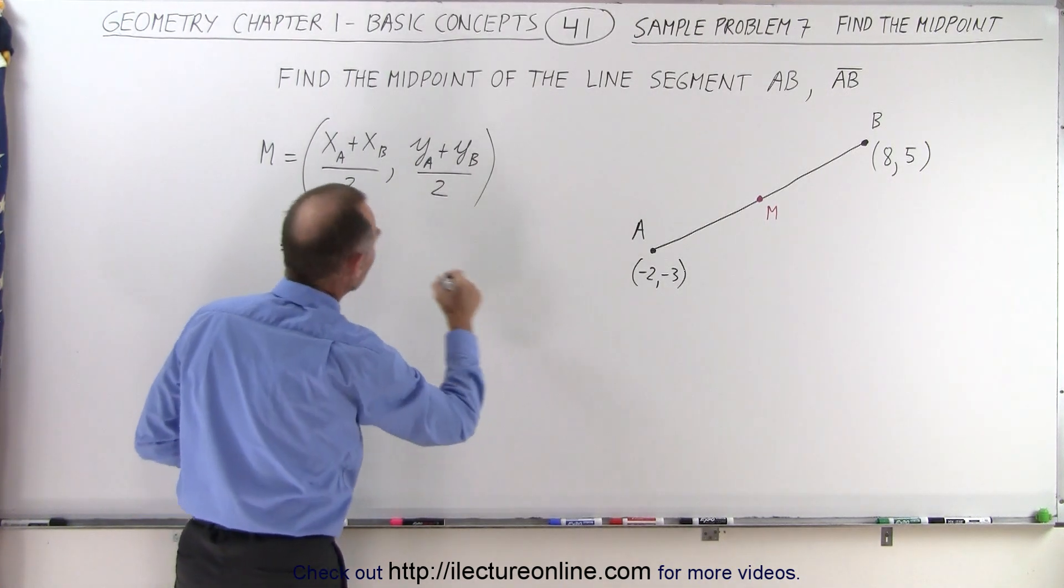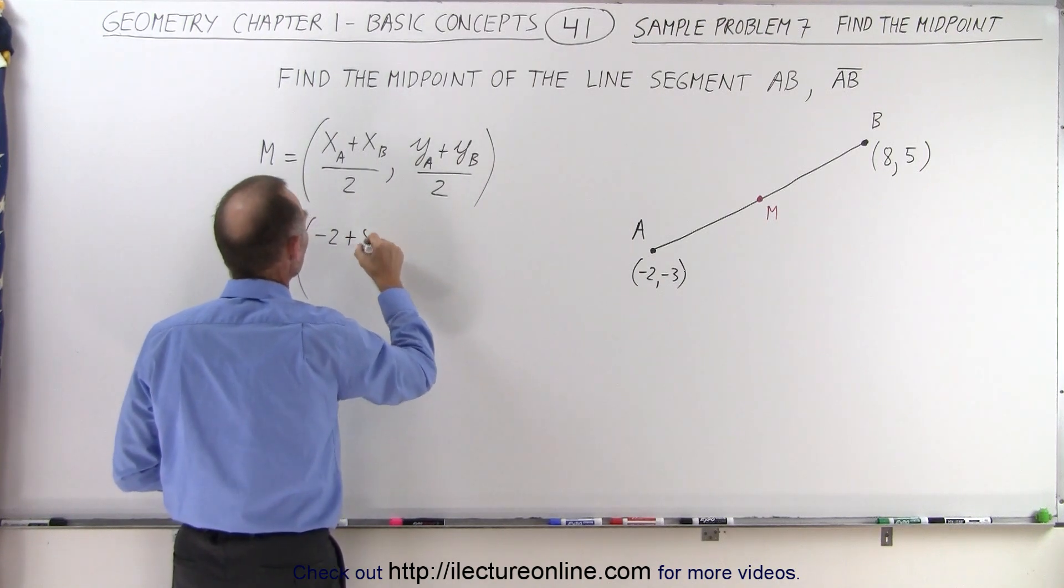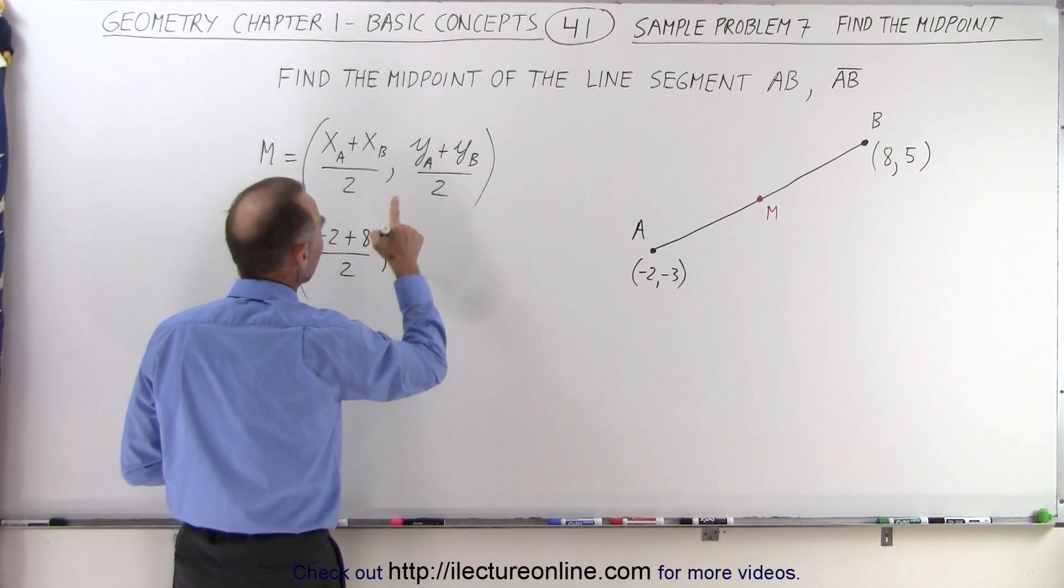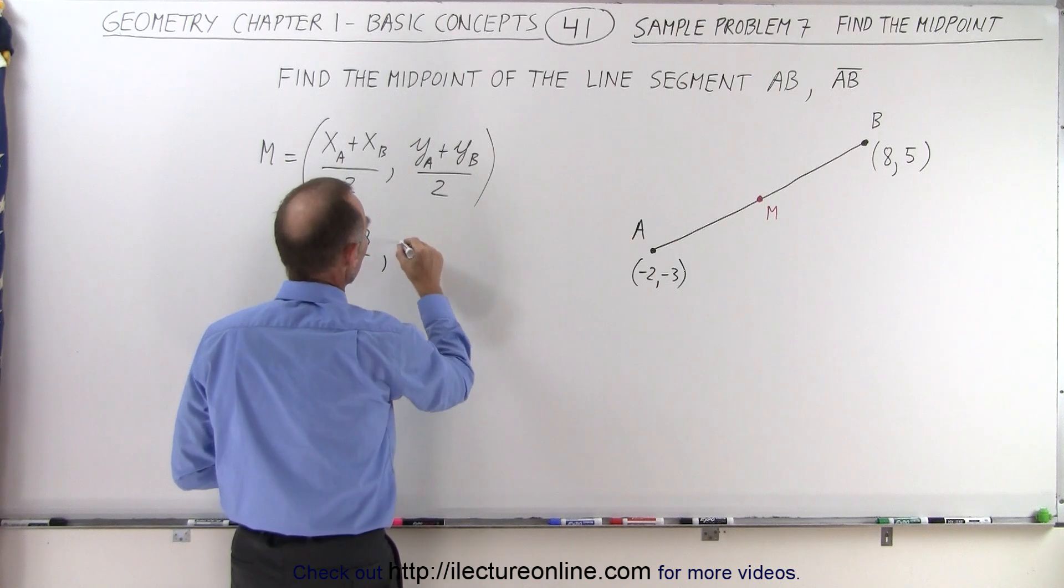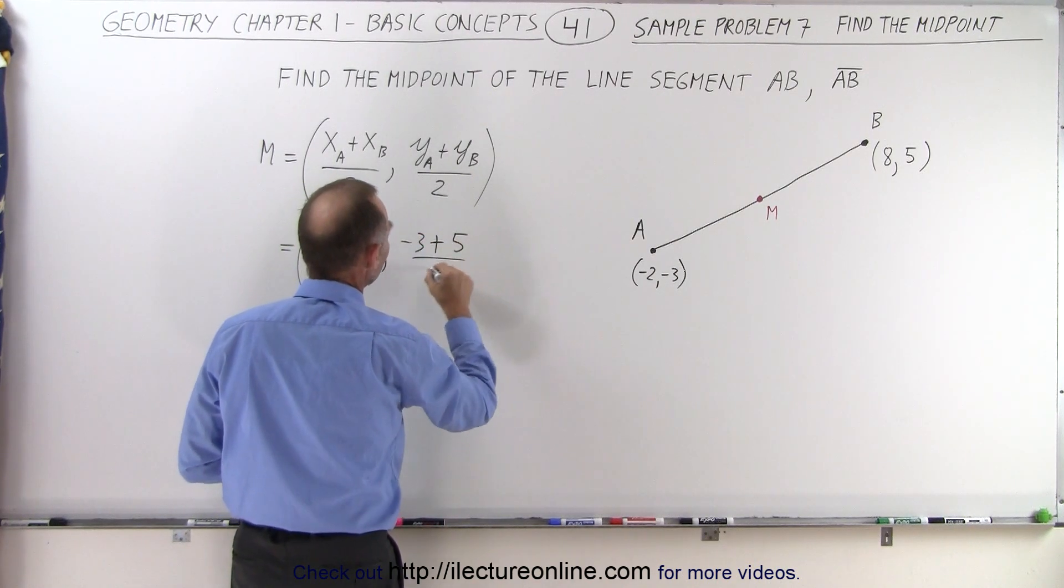So for x sub A, that's negative 2. We add to that x sub B, which is 8. Divide that by 2, and y sub A will be minus 3 plus y sub B, which is 5. We divide that by 2.